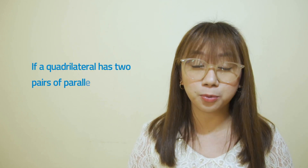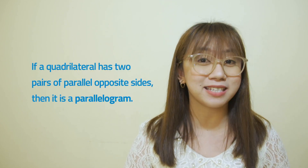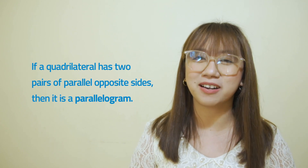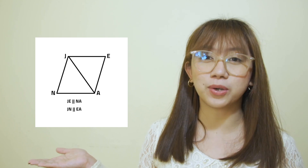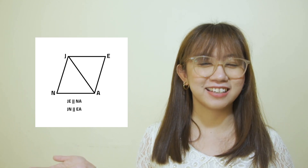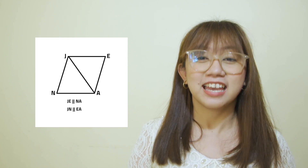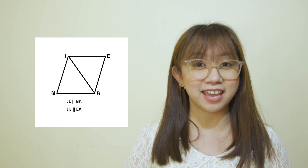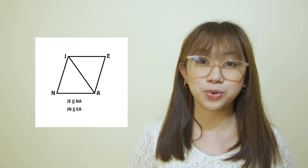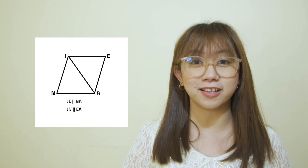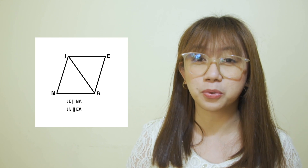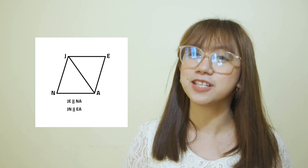Let's recall the theorems to test Parallelograms. If a quadrilateral has two pairs of parallel opposite sides, then it is a Parallelogram. Take a look at this example. This is quadrilateral GENE. The side opposite to JE is NA, and the side opposite to JN is EA. These are the two pairs of sides that are parallel. This proves that quadrilateral GENE is a Parallelogram.